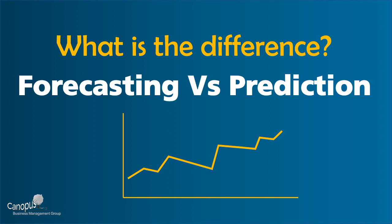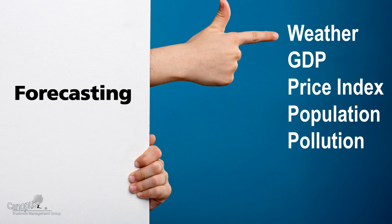Some of the common forecasts that we see regularly relate to weather, economic parameters such as GDP, price index, population, and sometimes pollution forecasts. There are a lot of fundamental similarities and differences between forecasting and prediction, and that's what we're going to check out in the next few minutes.